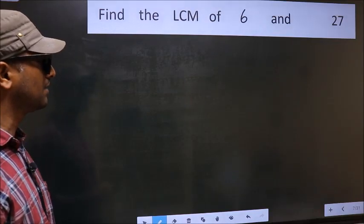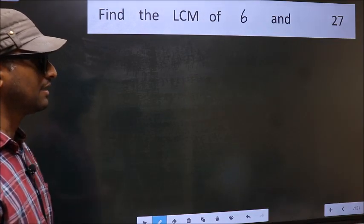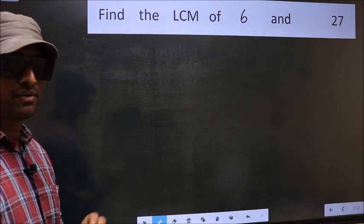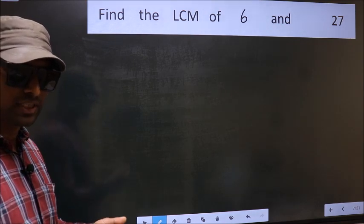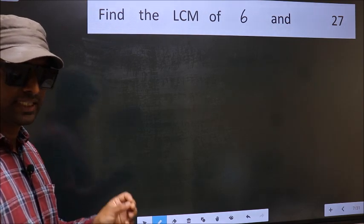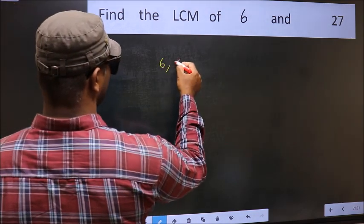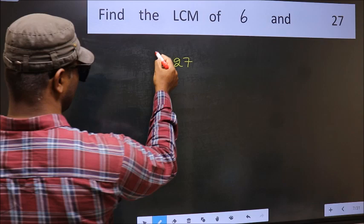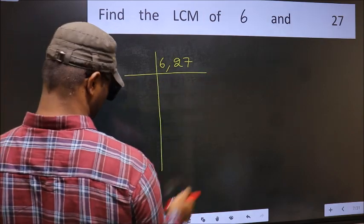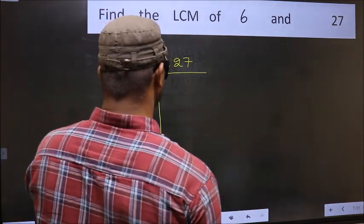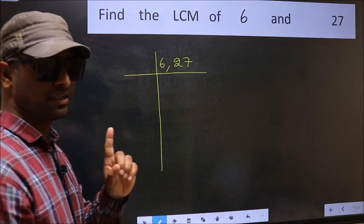Find the LCM of 6 and 27. To find the LCM, we should frame it in this way: 6, 27. This is your step 1.